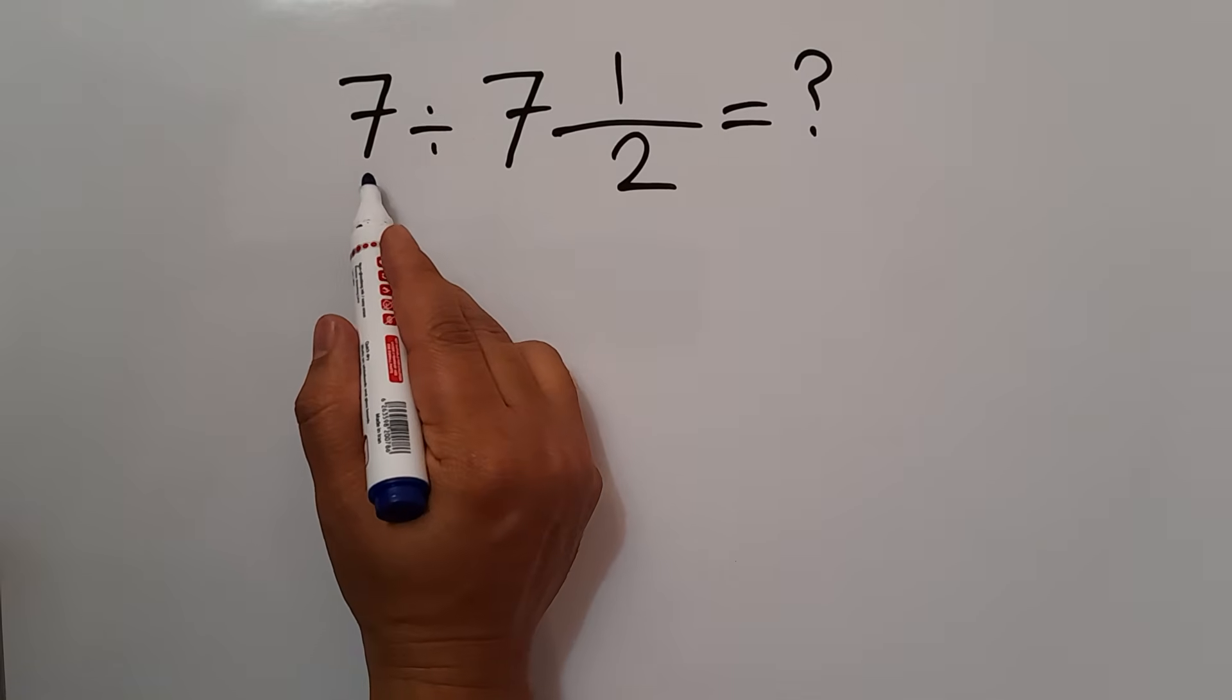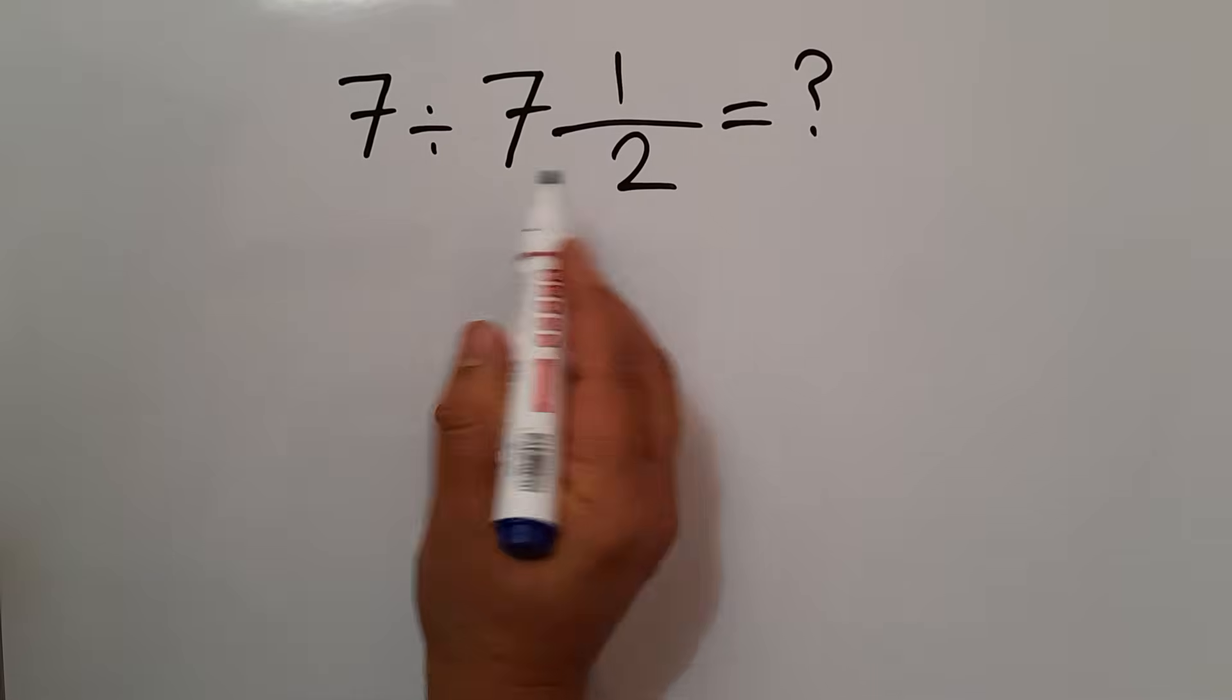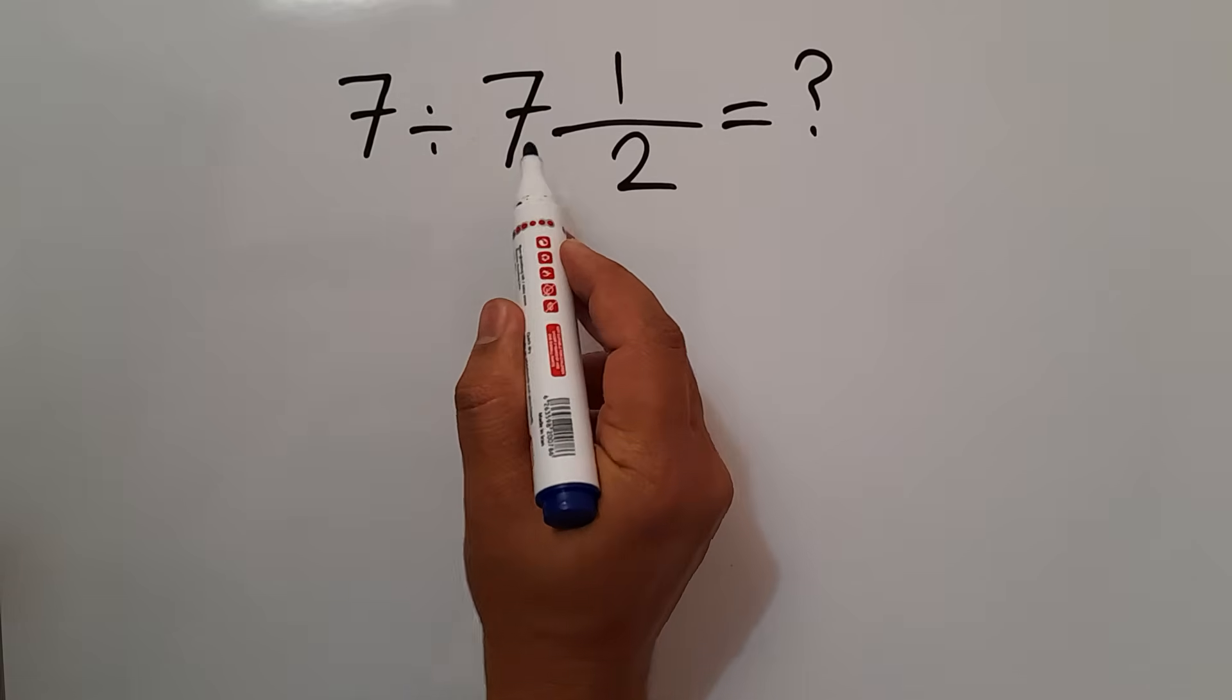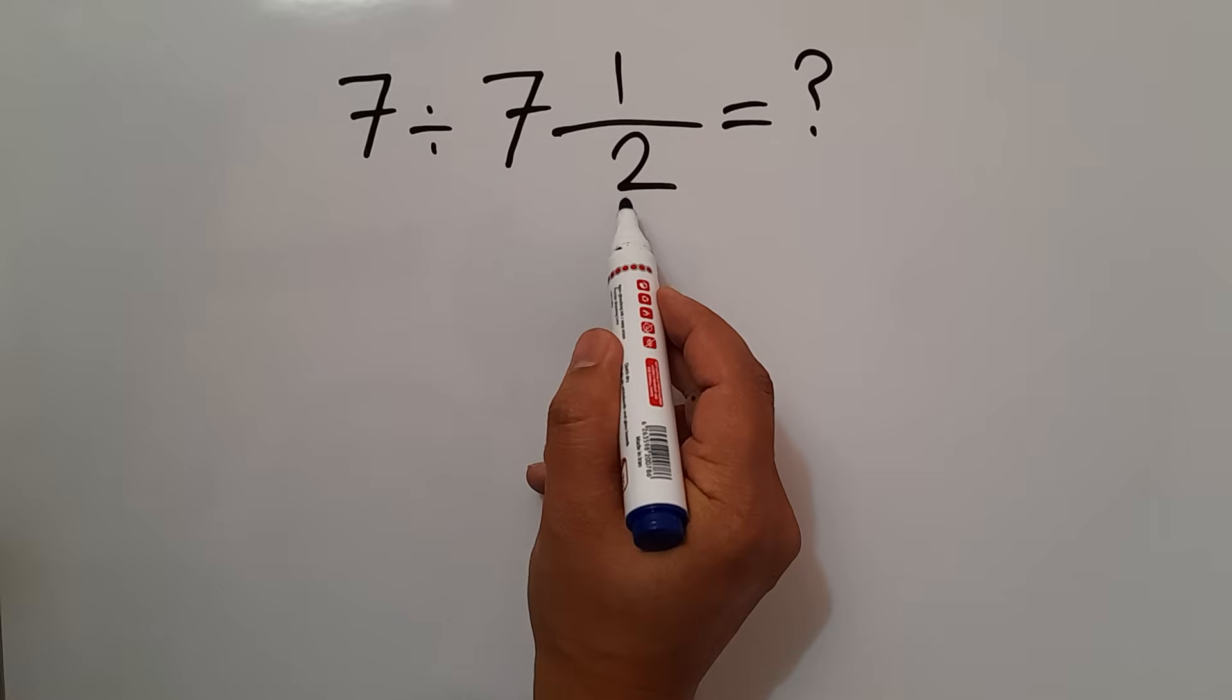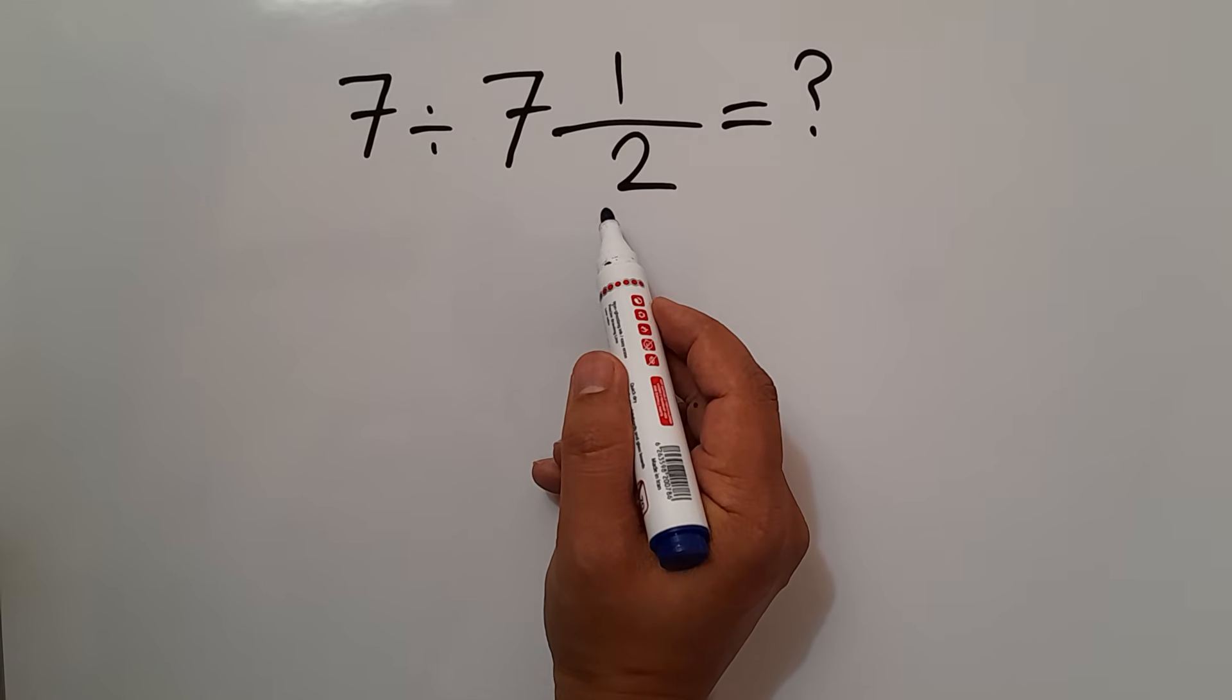Hey guys, welcome to MathJoy. In this video, we want to find the value of this expression: 7 divided by 7 and 1 over 2. Are you ready to solve? Let's go and get started.